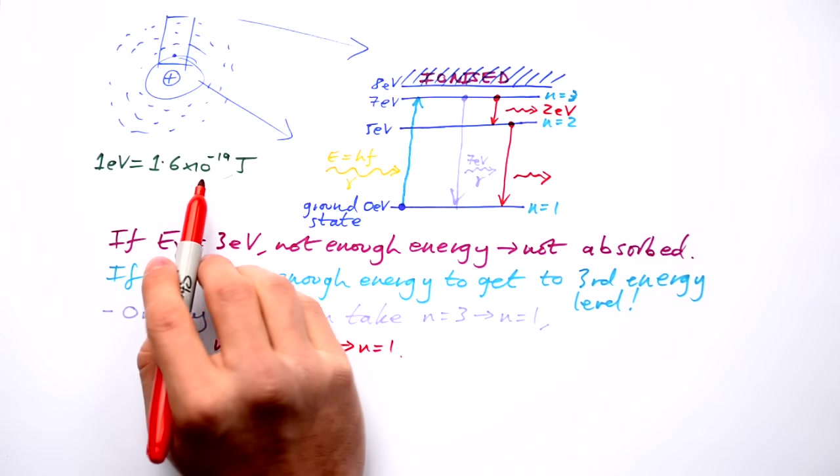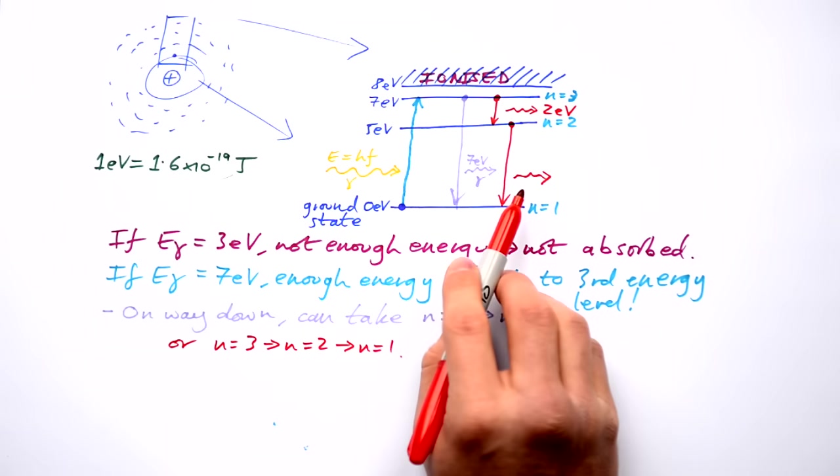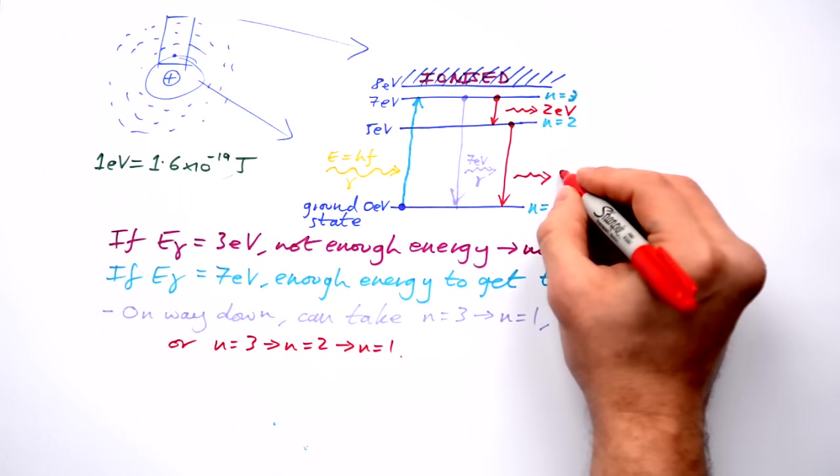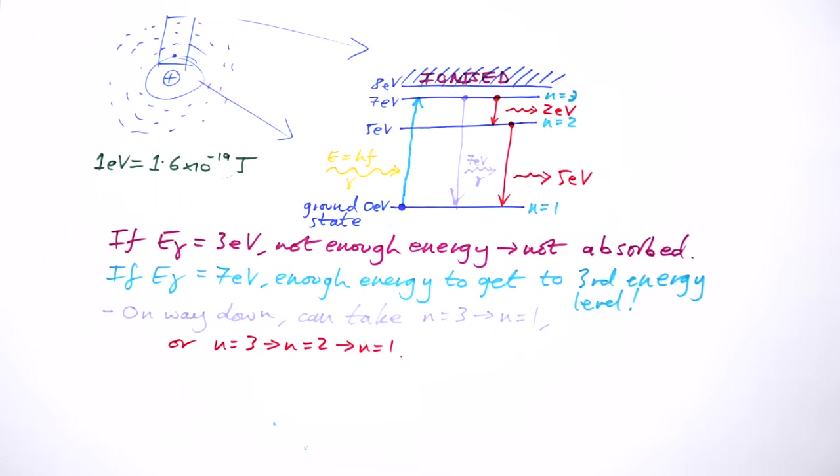So it's going to be 3.2 times 10 to the minus 19 joules. This one here is going to release a photon that has five electron volts of energy. So it's going to be eight times 10 to the minus 19 joules.